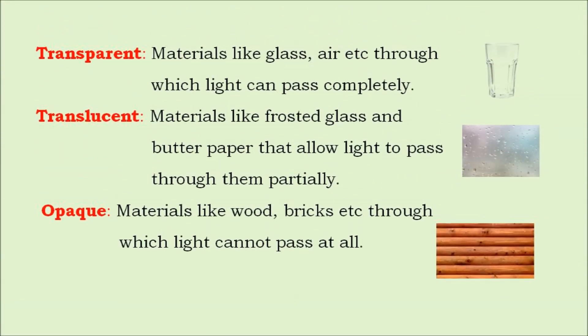Now let's learn transparent, translucent and opaque objects. Materials through which light can pass completely are called transparent objects. Materials that allow light to pass through them partially are called translucent objects. And materials through which light cannot pass at all are called opaque objects.